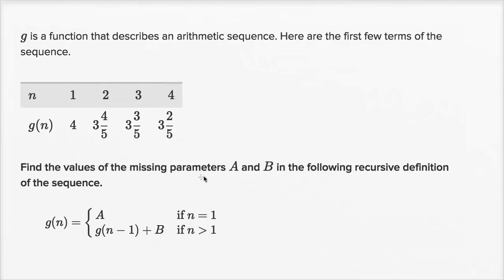Find the values of the missing parameters a and b in the following recursive definition of the sequence. The nth term is going to be equal to a if n equals 1, and it's going to be equal to g(n-1) plus b if n is greater than 1.